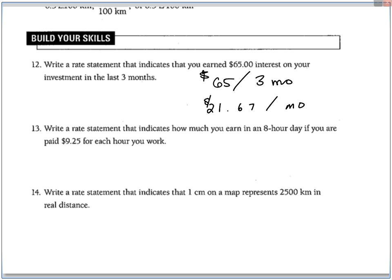Next one, write a rate statement that indicates how much you earn in an eight-hour day if you are paid $9.25 for each hour that you work. So here's the rate, it's $9.25 per hour that you work. And if you work in an eight-hour day, times that by eight and you'll figure out how much you make per day. $9.25 times eight, $74 per day. And that's an eight-hour work day.